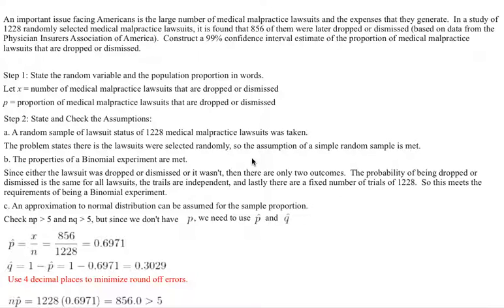In a study of 1,228 randomly selected medical malpractice lawsuits, it is found that 856 of them were later dropped or dismissed. This is based on data from the Physicians Insurance Association of America. Construct a 99% confidence interval estimate of the proportion of medical malpractice lawsuits that are dropped or dismissed.